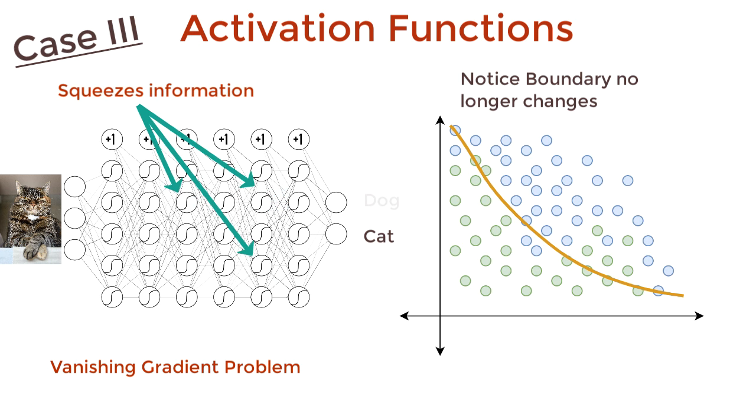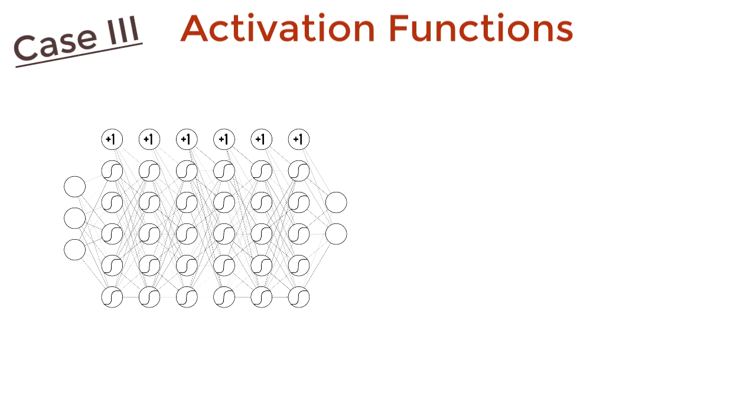It squeezes information. During the backpropagation step, the gradients become smaller and smaller until eventually they vanish. No gradients means no learning. A remedy to this is to use an activation function that doesn't squeeze information, like relu.